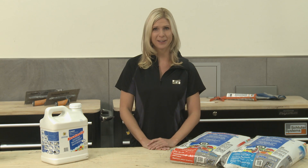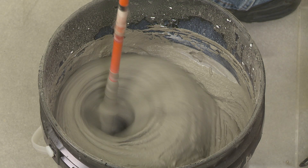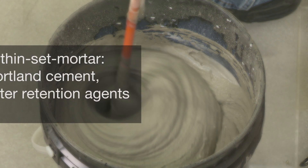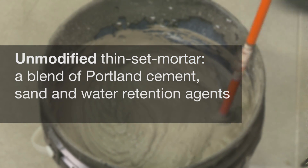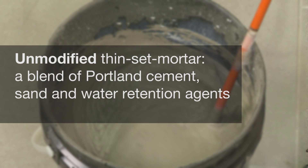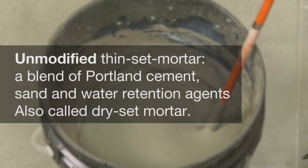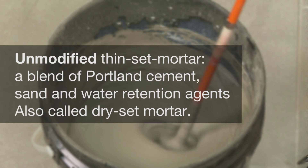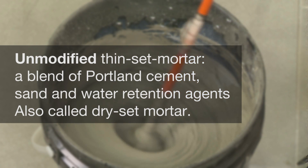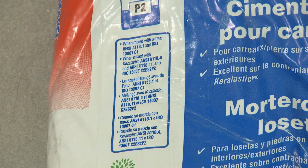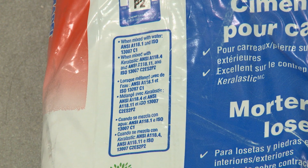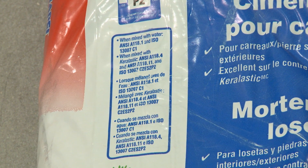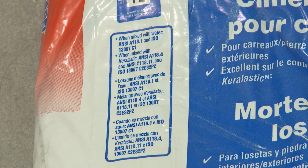Let's start with unmodified thinset mortar. In general, unmodified thinset mortar is a blend of Portland cement, sand, and water retention agents that are mixed with water by the user. Unmodified thinset mortar may also be referred to as dry set mortar by the manufacturer. The appropriate product standard for unmodified thinset mortars is ANSI A118.1. Look for the standard on the packaging.